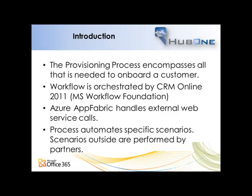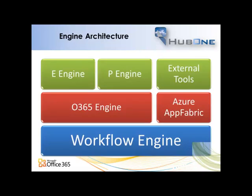This process automates a number of specific scenarios. There are some scenarios which are out of scope and we expect those to be handled by systems integration partners such as Hub1. The architecture of the engine is based on an underlying workflow engine delivered by Dynamics CRM Online 2011. There's then the Office 365 engine which contains all the entities, fields, forms and other items needed to understand an Office 365 migration. On top of that we have the E engine for enterprise SKUs and the P engine for small business and professional SKUs. Using the Azure App Fabric, the workflow engine can call out to external tools — our migration tools at the moment — but can also integrate with third-party billing systems.